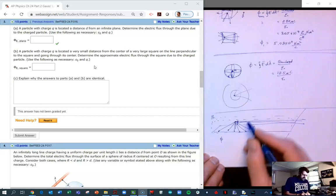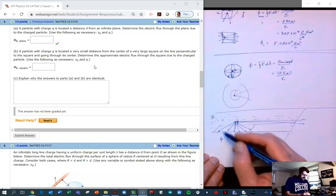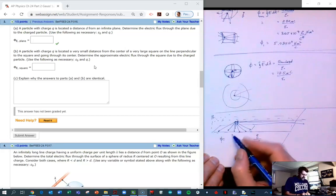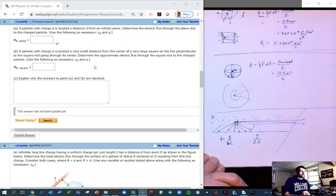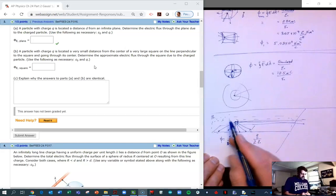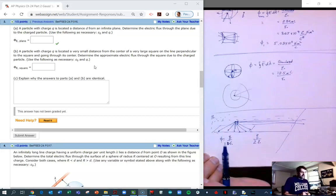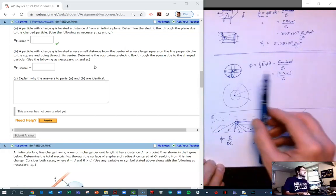And so it's simply going to be Q over 2 epsilon naught. Because the total flux, if we drew a surface throughout the whole thing, the total flux would be Q over epsilon naught. And so with one plane, it's going to be one half of that. Isn't that nifty?